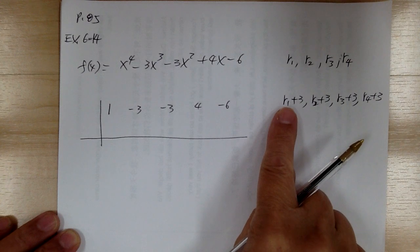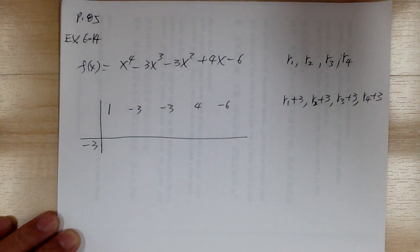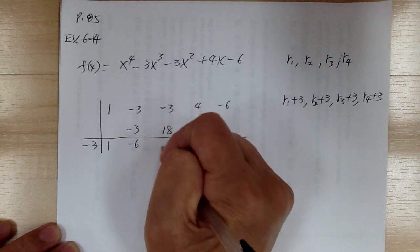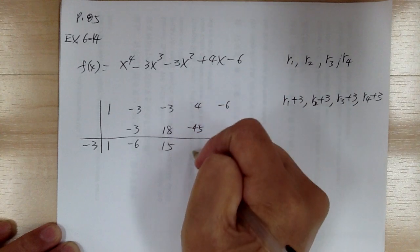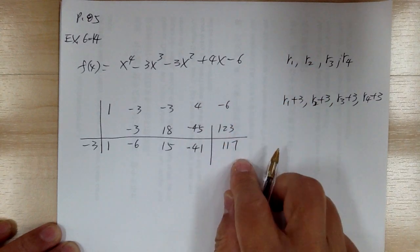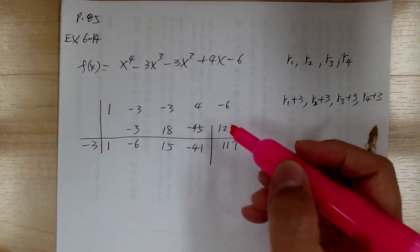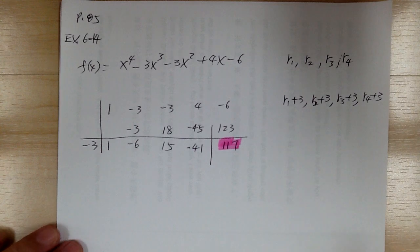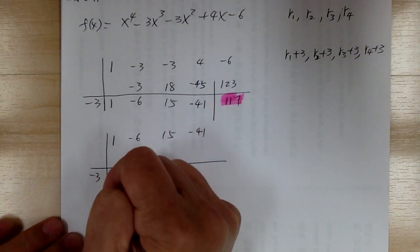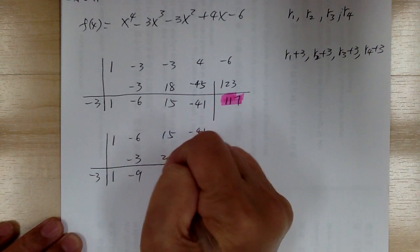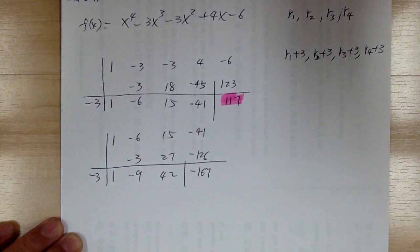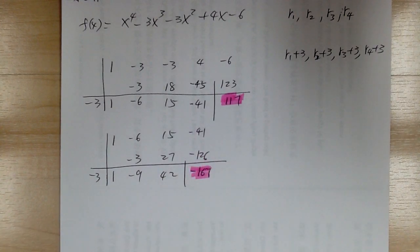Set up the coefficients: 1, negative 3, negative 3, 4, negative 6. Since the roots are 3 greater, in synthetic division you use negative 3 (the opposite). Drop, multiply, add — repeat across all terms. The last number at each step is your remainder and becomes part of the next row's coefficients. Continue the process — you'll get 1, negative 6, 15, negative 41, and a remainder.